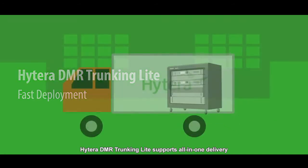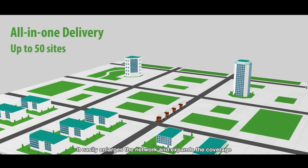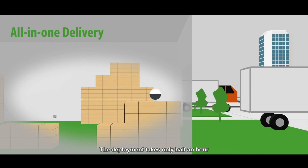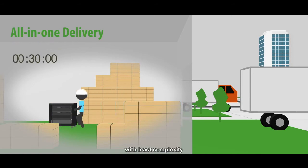Hytera DMR trunking light supports all-in-one delivery. It easily enlarges the network and expands the coverage. The deployment takes only half an hour with least complexity.